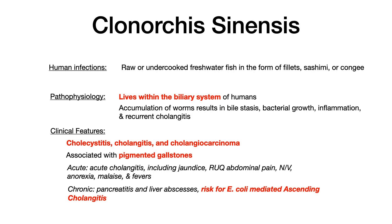Clinically, because clonorchis lives in the biliary tree, all symptoms are related to the biliary system: cholecystitis, cholangitis, and increased risk for cholangiocarcinoma. This is really important to differentiate from hematobium — hematobium increases the risk for squamous cell carcinoma of the bladder, while clonorchis sinensis increases the risk for cholangiocarcinoma. Both pathogens increase the risk for a certain type of cancer — very high yield.